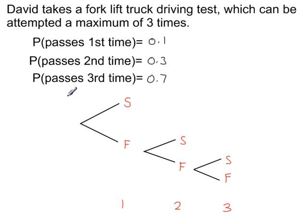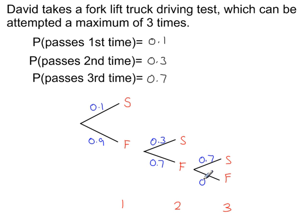The probability he passes the first time is 0.1, the second time is 0.3, and the third time is 0.7. So the probability that he's failed on the first attempt is 0.9, on the second is 0.7, and on the third is 0.3. The probabilities added together for any V-shaped branch on a tree diagram should always be 1 — so each pair of branches adds up to 1.